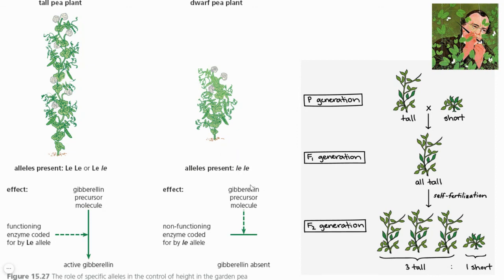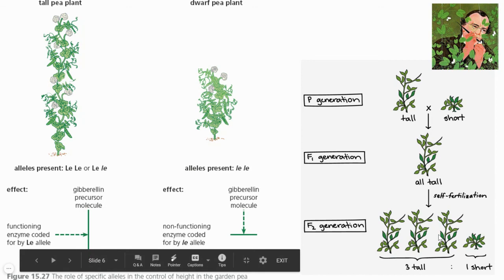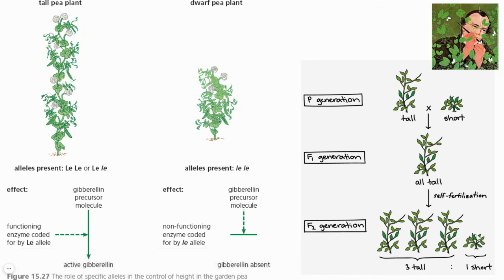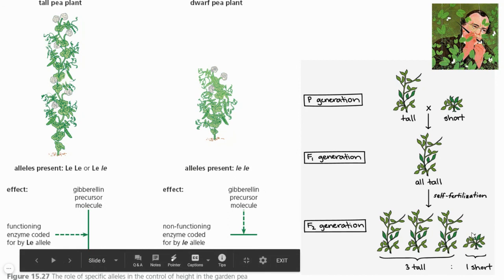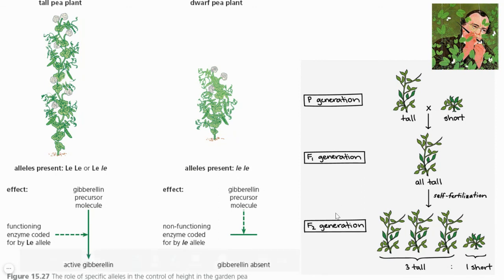With our current molecular biology knowledge, we can tell that Mendel's dwarf plant had both small le alleles for the enzyme that catalyzes gibberellin formation. Because this dwarf plant does not produce gibberellin, it remains dwarf, whereas the other F2 offspring are either homozygous dominant or heterozygous, and that's why they are tall.